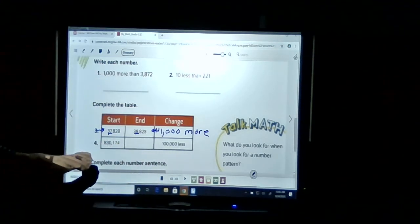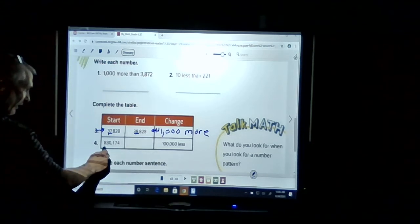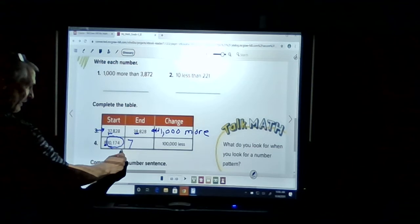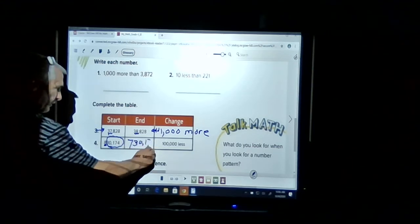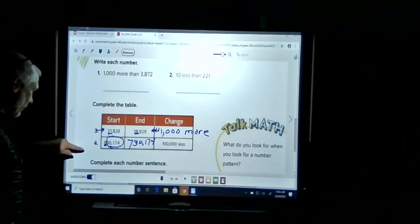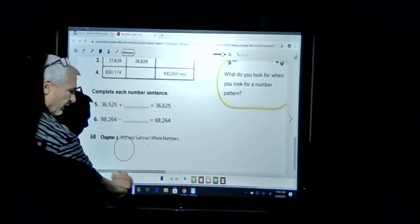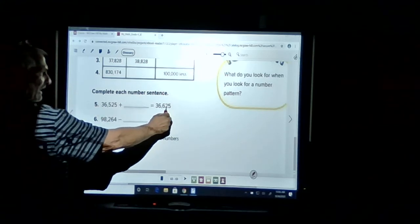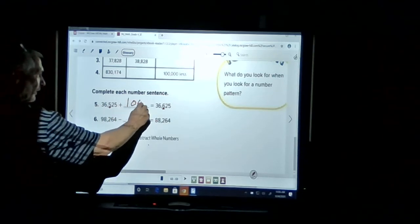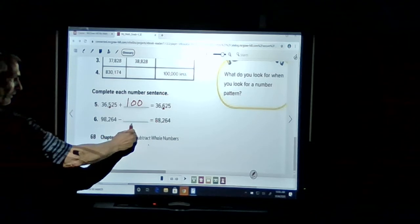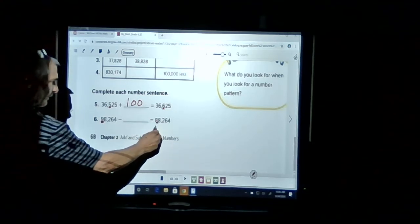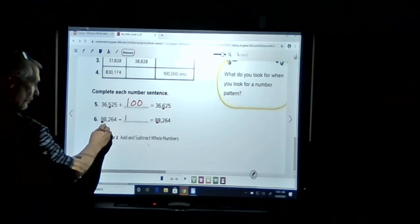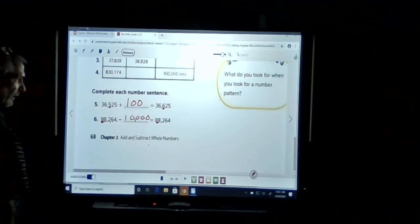Now we have to go 100,000 less. This is where we started. If we go 100,000, here's the 100,000s. We have to go less. That means that 8 will be a 7. Keep all the other digits the same. Comma, 174. Let's complete the sentence. 36,000 plus is 36,525. 36,600. We changed 1 in the 100s. Plus 100. 98,000, 88,000. We changed 1. We went down 1. So we subtracted how many digits past this. 1, 2, 3, 4. 10,000.